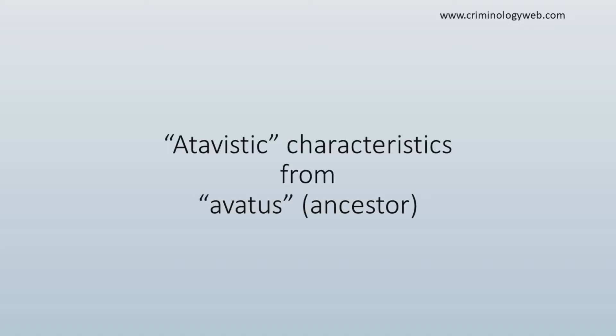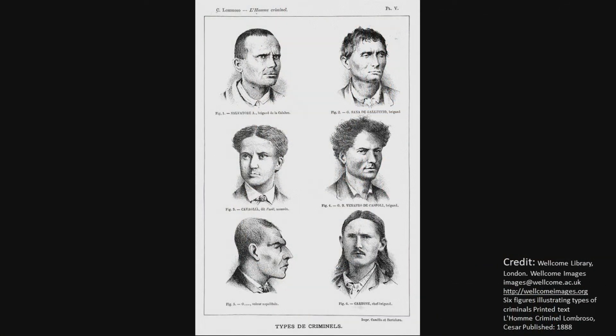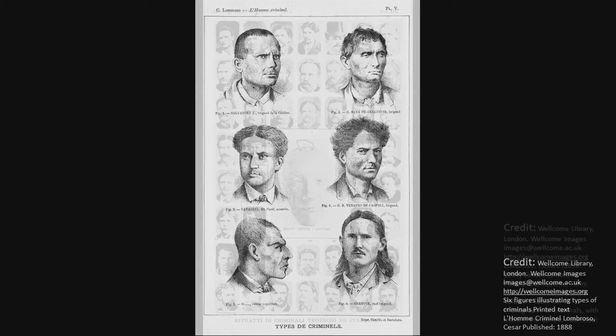Atavistic comes from the word avatus, which means ancestors in Latin. According to Lombroso, the physical abnormalities that offenders have occurred because offenders were the products of an earlier stage of human evolution, a stage where more primitive humans and apes existed. Thus, offenders are basically throwbacks to earlier phases of human history. Connected to the idea of atavistic characteristics is the idea of degeneration. According to Lombroso, offenders have certain physical and mental characteristics of primitive humans, and they commit crime because of these biological abnormalities.